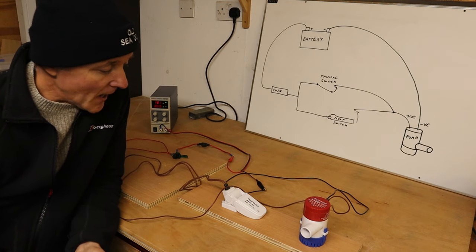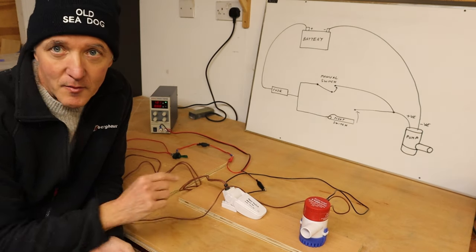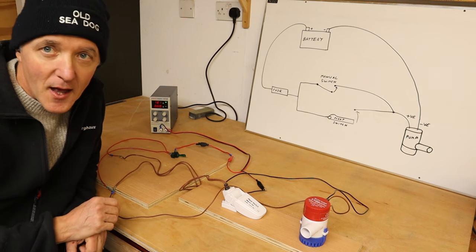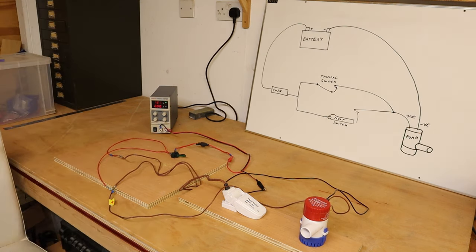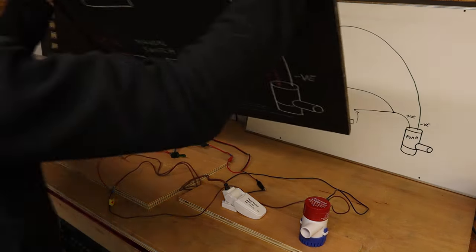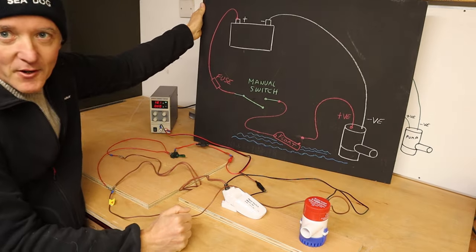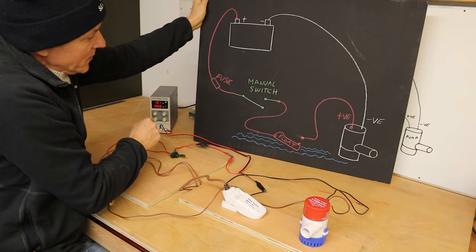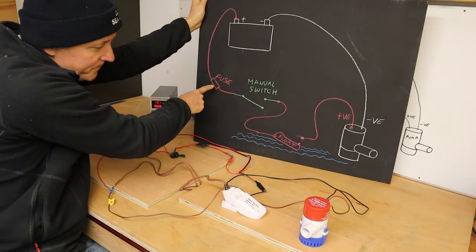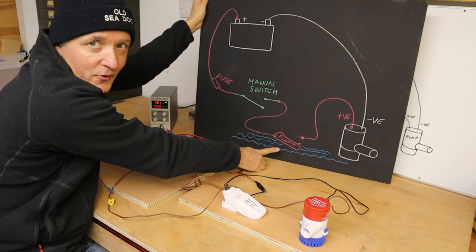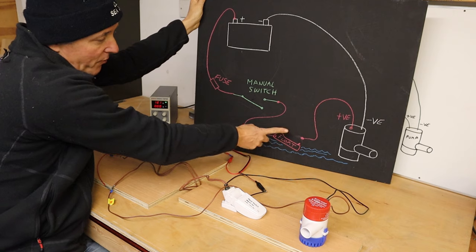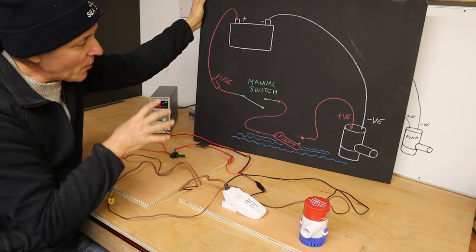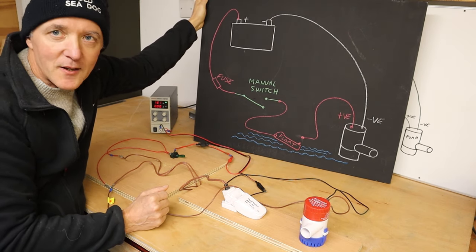So I've actually done a video on how to use a float switch and a bilge pump before. We had a float switch and a manual switch, and I'm going to recap on what we did then with this wiring diagram here. We've got the bilge pump, our power, a fuse to protect the electrics, our float, and as the water level rises in the bilge, the float operates. But we also have this override switch, so you can decide whether the whole system is set and live or not.